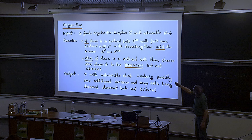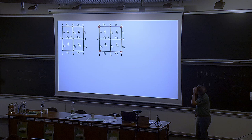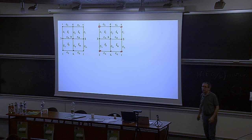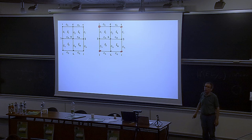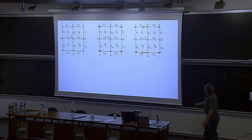Now if there's a critical cell with just one critical cell in its boundary, then add an arrow. The dormant cells aren't critical, so if I look at the one-cell E5, that has two cells in the boundary: one and two. Cell one is no longer critical — it's dormant — so now I only have one critical cell in the boundary of E5, which is zero-cell number two. So I'm going to put an arrow from two to E5. Now I've created an arrow and I'm going to go again.